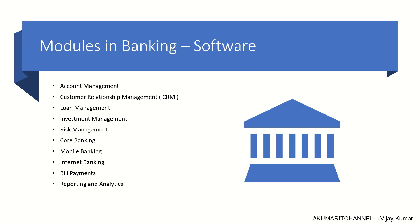The core banking module manages the bank's core operations such as maintaining a database of accounts, performing transactions, and providing account statements. Mobile banking provides customers with the ability to access bank accounts and perform transactions through their mobile devices. Internet banking provides customers with the ability to access bank accounts and perform transactions through the internet — no need to visit branches. The bill payments module enables customers to pay bills such as utility bills and credit card bills through the bank's platform. Reporting and analytics provides management with information about the performance of the bank, various business units, customer behaviors, and trends.